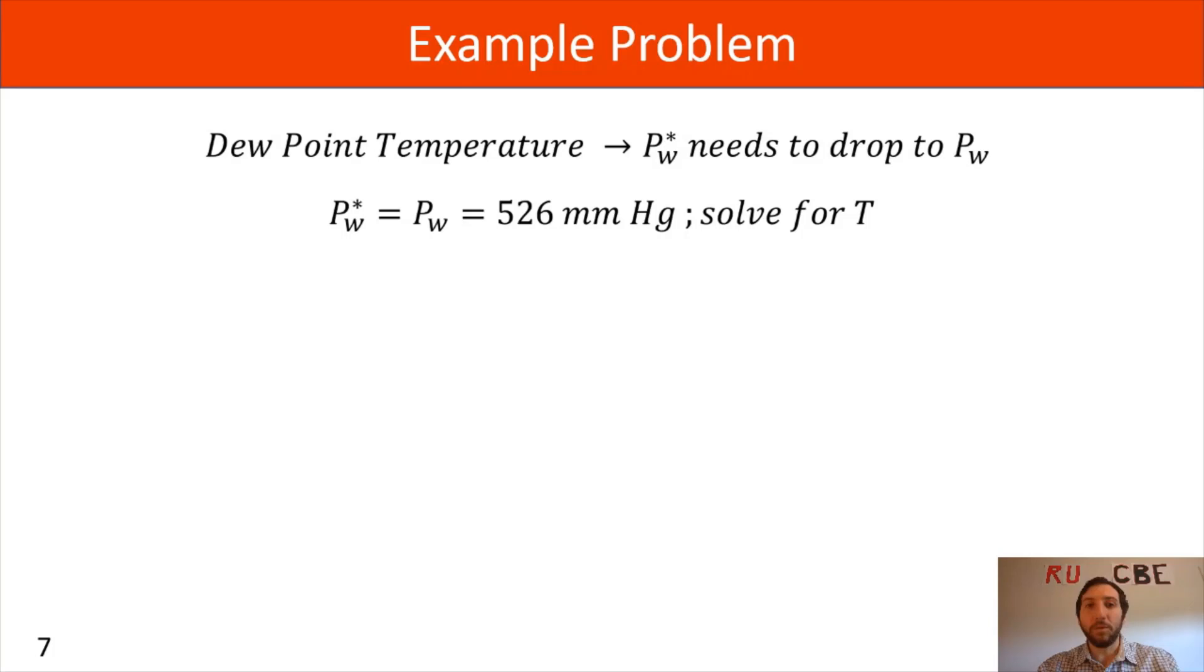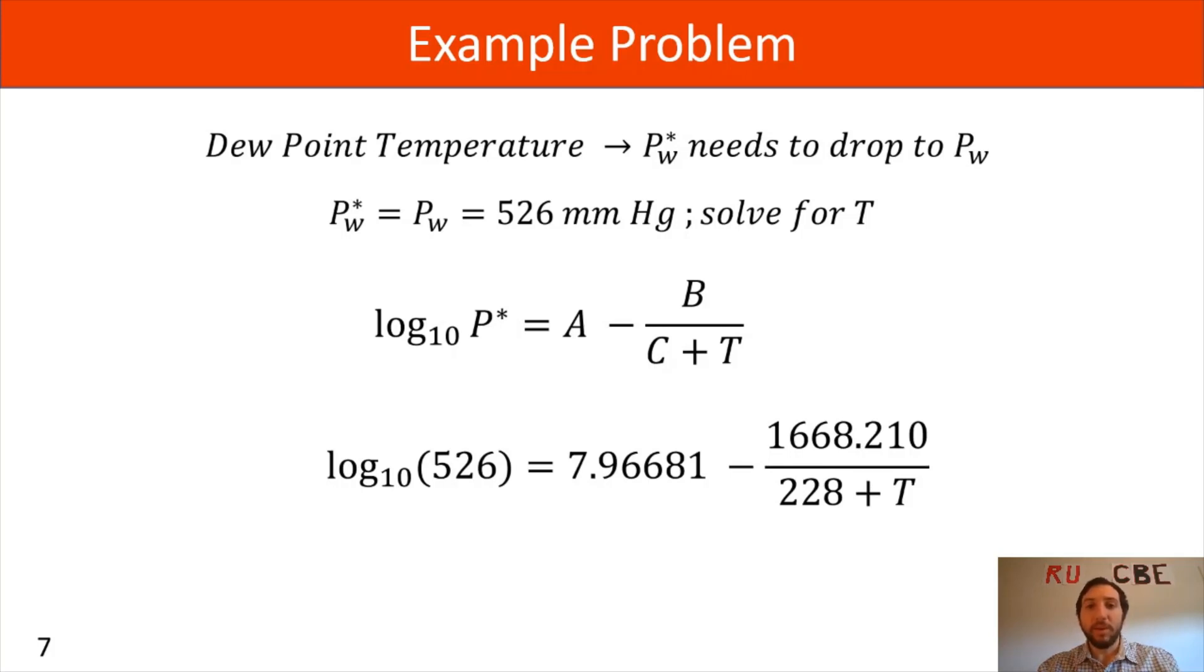Pw star needs to equal 526 millimeters of mercury, so we'll need to solve for temperature. We can again use the Antoine equation to do this calculation. This time, instead of substituting in for temperature, we'll substitute in for our P star, which is 526 millimeters of mercury. We substitute that value in, rearrange everything to solve for T, and what you should get is a T of 90 degrees Celsius.